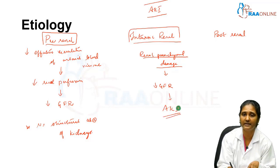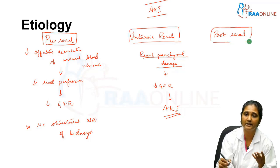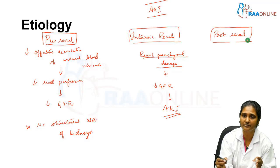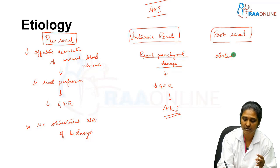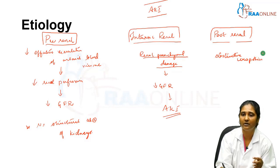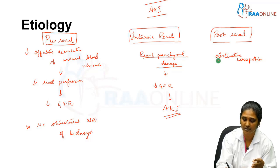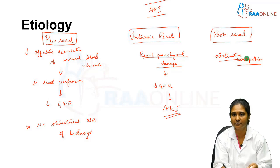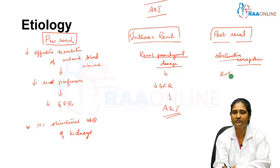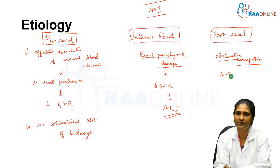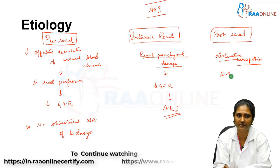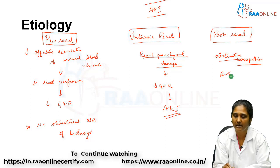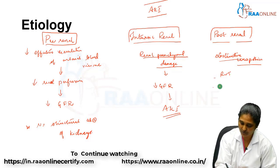In post-renal AKI, urine is being formed but cannot exit the body due to obstructive causes — obstructive uropathies. Examples include posterior urethral valve, pelviureteric junction obstruction, vesicoureteric junction obstruction, vesicoureteric reflux, and renal vein thrombosis. So broadly, AKI causes are classified into pre-renal, intrinsic renal, and post-renal, including ureteric obstruction.